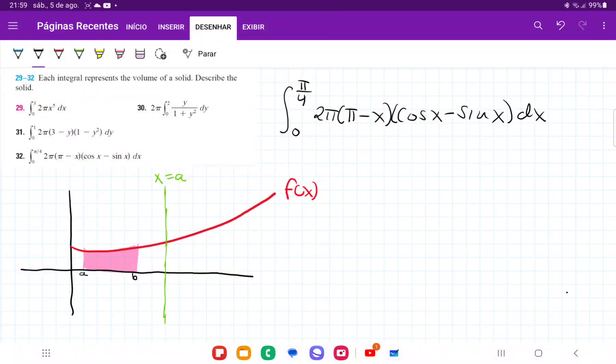So for number 32, we want to be able to describe the solid that results in this integral right here. So what we're doing is we are reverse engineering it. This does say dx, so we know that we're integrating with respect to x.